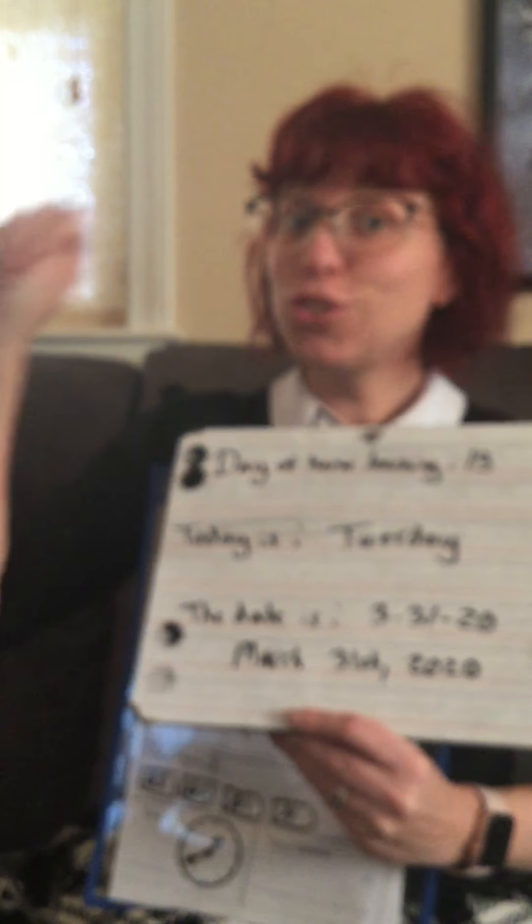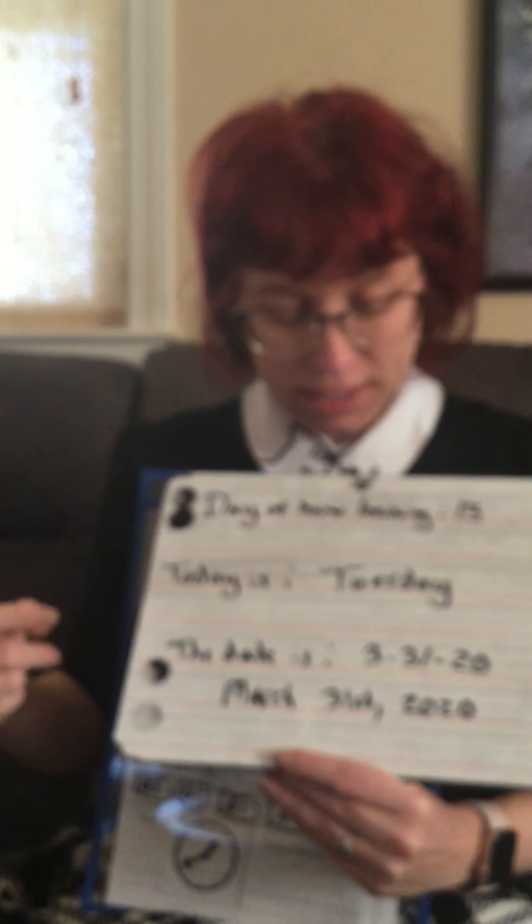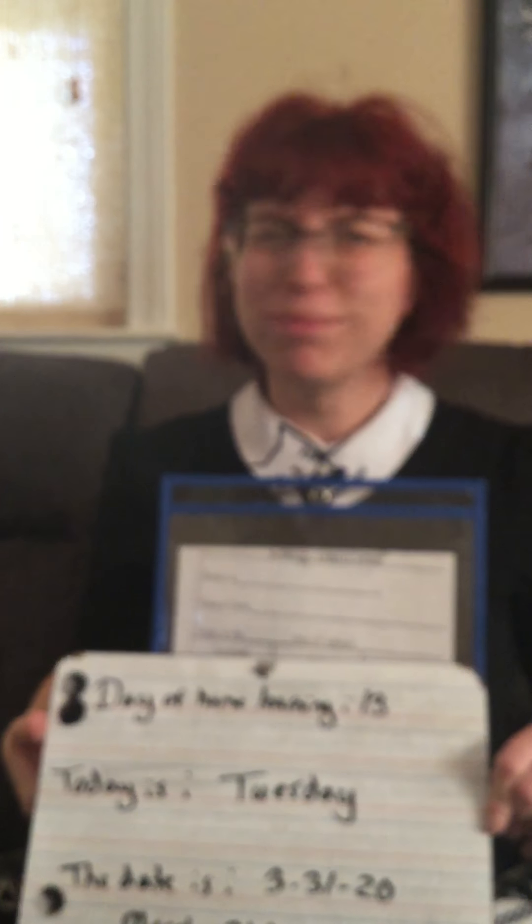Hi everybody, welcome back! It's time for our morning meeting or daily calendar. Today is Tuesday, the date is March 31st, 2020. The day of home learning is 13. What's in the hundreds place? Zero. What's in the tens place? One. What's in the ones place? Three. Is there anything in the thousands place? No.